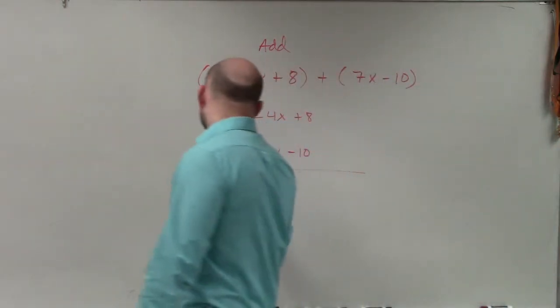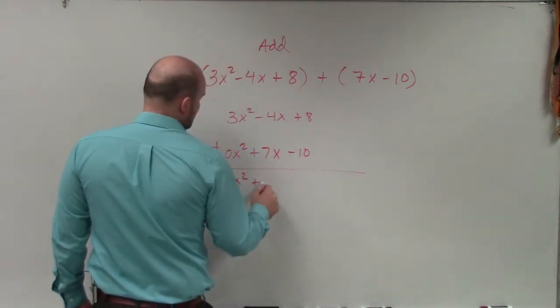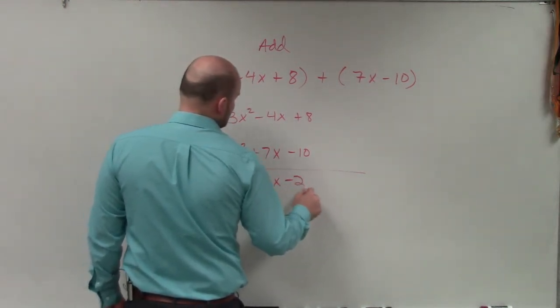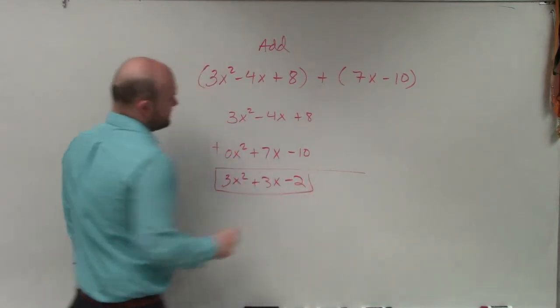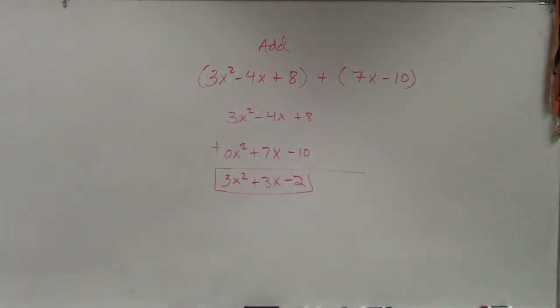So you can add them vertically, and your final answer is 3x² + 3x - 2. And that would be your final answer.